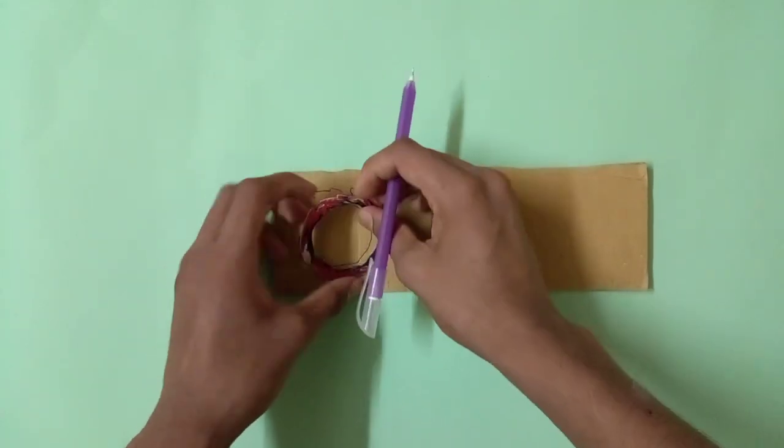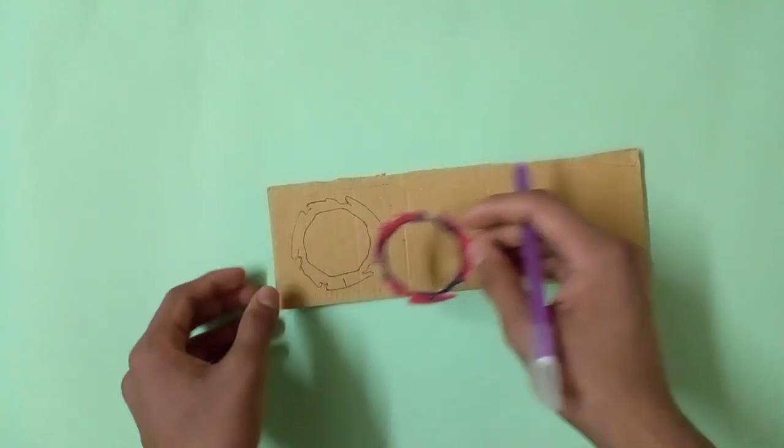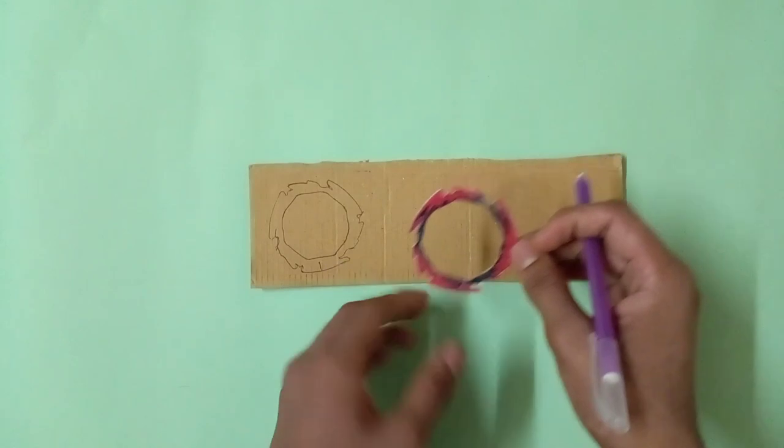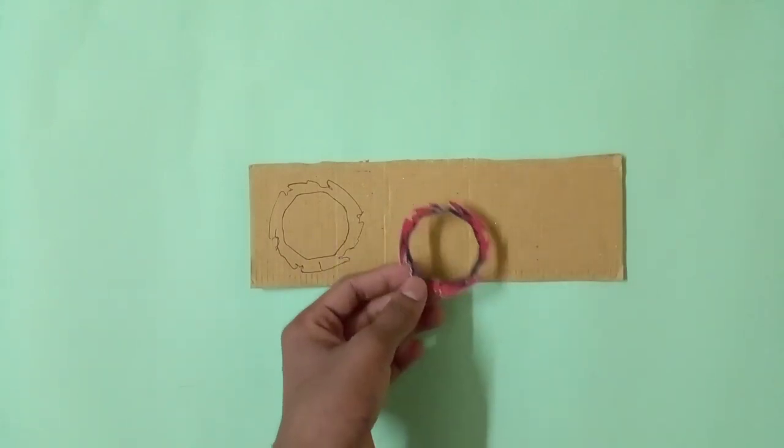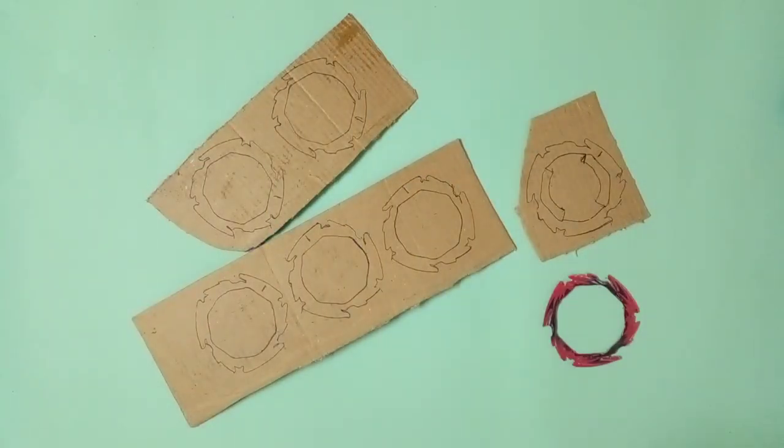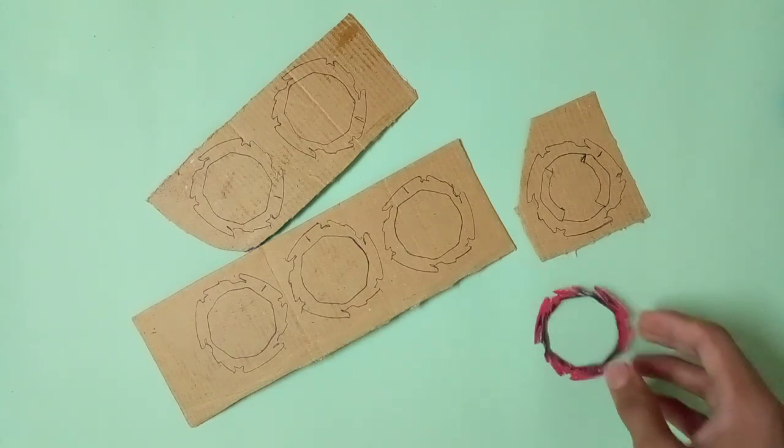So guys, as you can see, I had created a template of it like that on the cardboard piece. Now similarly create five templates like this. Now let me show you that after doing. Otherwise it will take almost a long time. So guys, now as you can see, I had created five more extra templates, similarly like the devil ring template, as you can see in the video. Now it's time to cut them all out.